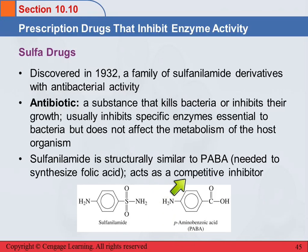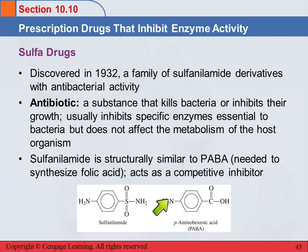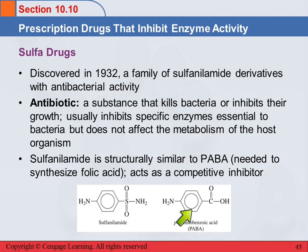Para-aminobenzoic acid is a simple enough molecule that we can draw its structure from its name: here's the benzoic acid with an amino group in the para-position. Sulfanilamide is similar in structure to PABA, which is needed to synthesize folic acid. Because sulfanilamide is similar to PABA, it acts as a competitive inhibitor in the enzymes and prevents them from functioning.